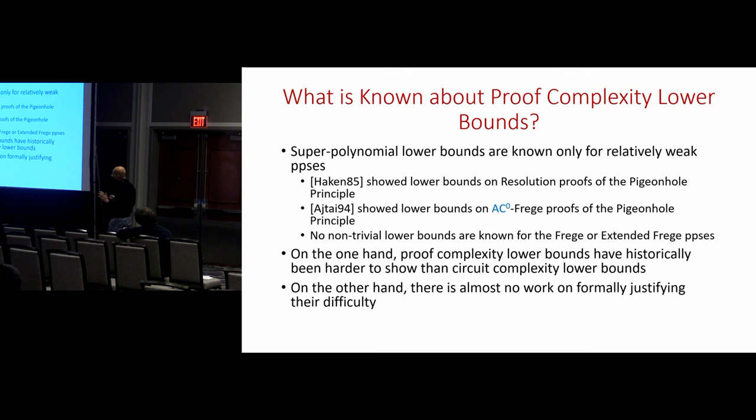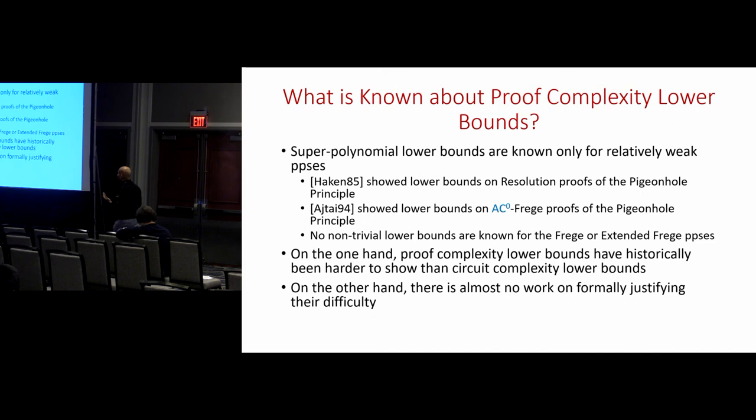Not all that much, especially for stronger proof systems. Superpolynomial lower bounds are known only for fairly weak proof systems. There's a famous result of Haken who showed a lower bound for resolution proofs of the pigeonhole principle — resolution is the proof system that featured heavily in the previous talk. The pigeonhole principle is a tautology expressing that you can't put n+1 pigeons into n holes. That's hard for resolution, and I showed superpolynomial lower bounds for constant-depth Frege as well, again for the pigeonhole principle.